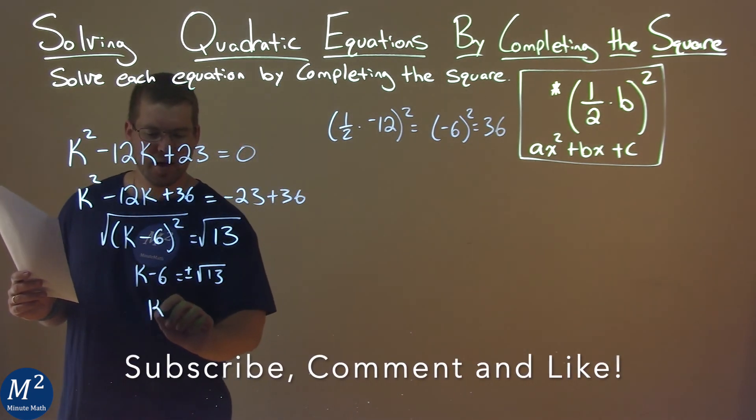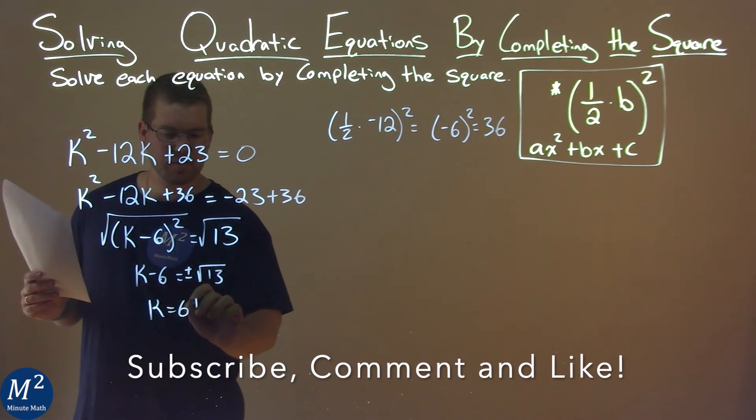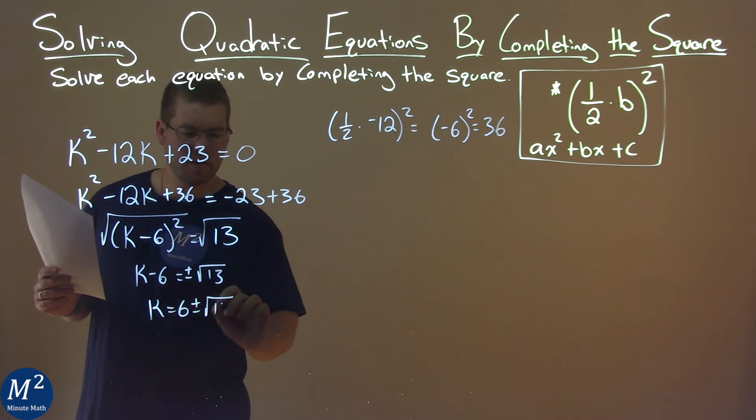Add a 6 to both sides, and k equals positive 6 plus or minus the square root of 13.